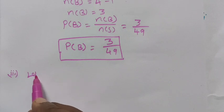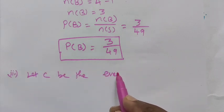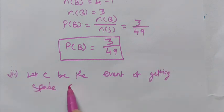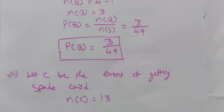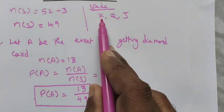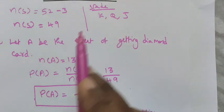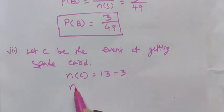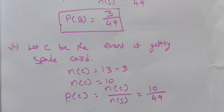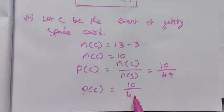Next, let C be the event of getting a spade card. Spade cards originally number 13, but king, queen, and jack of spades were removed, so N(C) = 10. The probability of getting a spade card is 10 out of 49 cards.